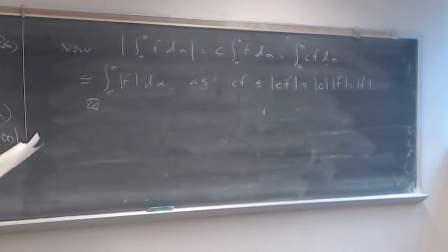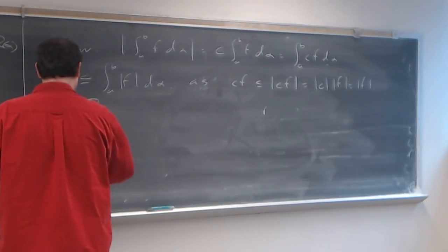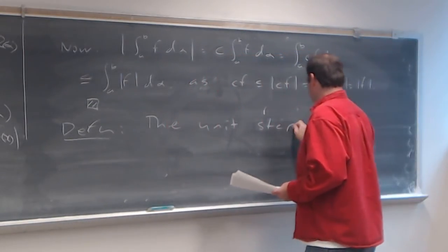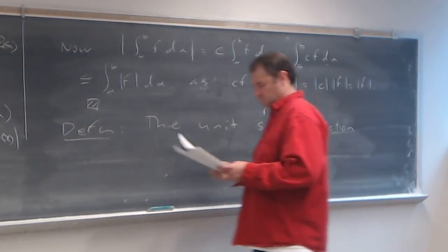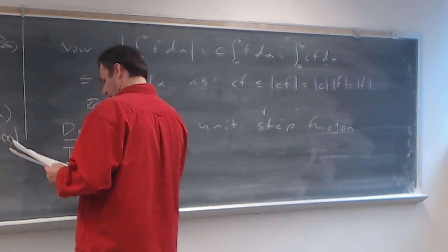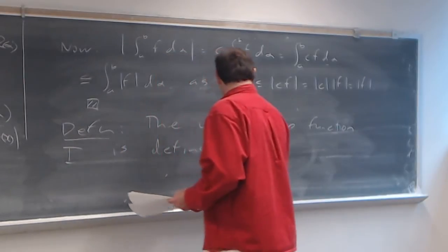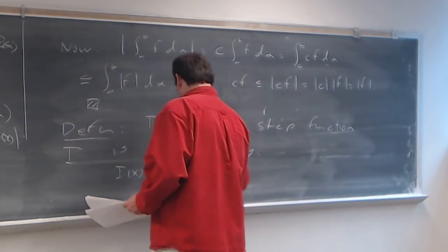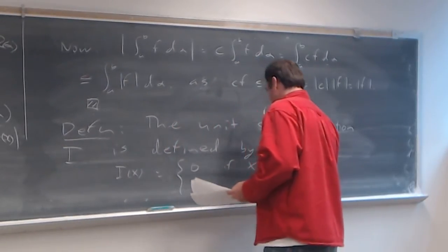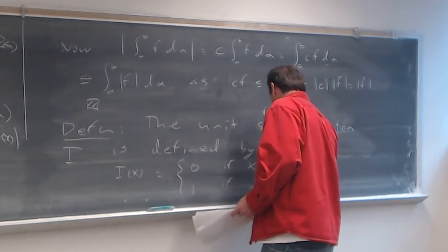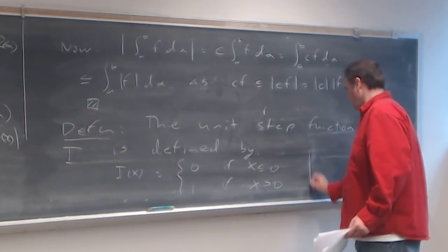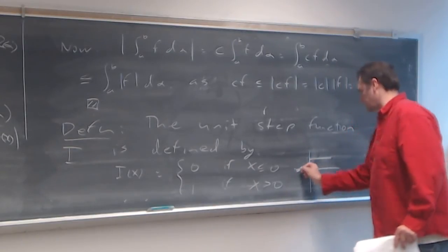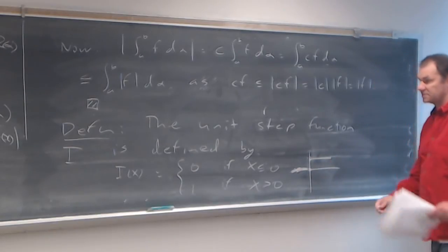Next I'm going to write up a definition. The unit step function, symbolized by I, is defined piecewise: I(x) = 0 if x ≤ 0, and I(x) = 1 if x > 0. Graphically, it's zero to the left and one to the right of the origin. That's the unit step function.